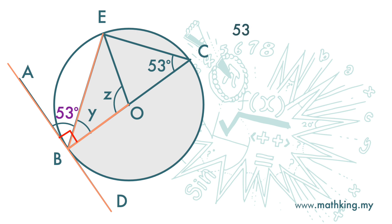So 53 degrees plus y is 90 degrees. And y is 90 minus 53. And that is 37 degrees.